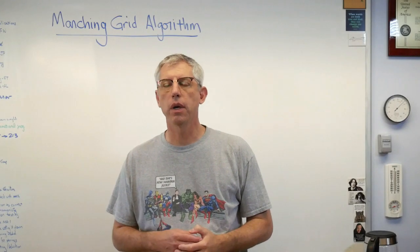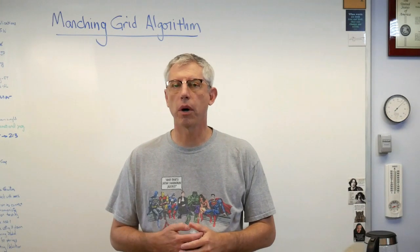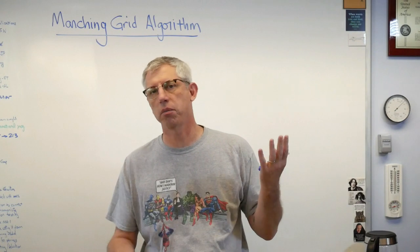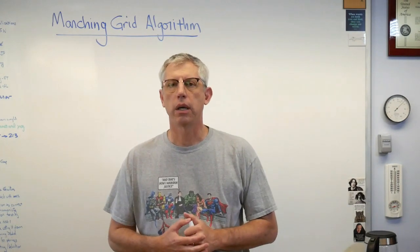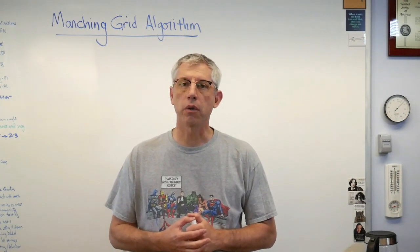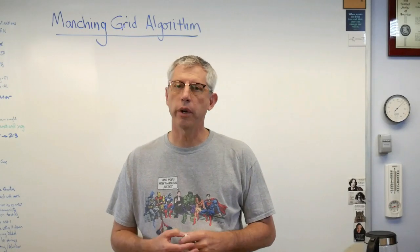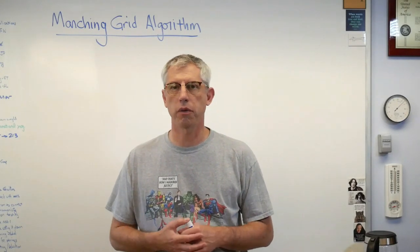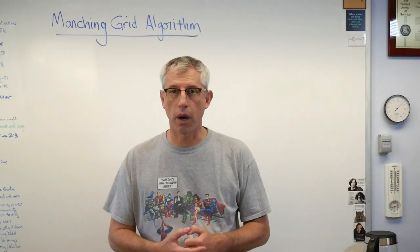Hey scholars, good to be back with you. In this lesson, I want to go over the marching grid algorithm. Marching grid has been around approximately forever. It's useful in a range of different problems, but we're interested in applying it to problems of optimization. We're going to use it to find the minimum value of an objective function.